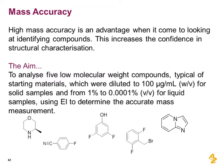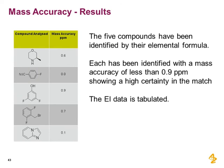The first experiment we looked at was mass accuracy results across five typical low molecular weight compounds using electron ionization. High mass accuracy increases confidence in structural characterisation, and usually one elemental formula can be identified. These five compounds were identified from their elemental formulae, each with less than 0.9 parts per million mass accuracy across the board — giving us the confidence we're looking for.